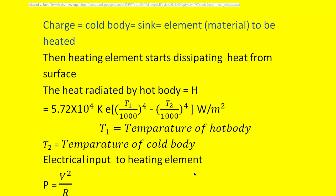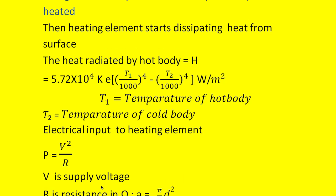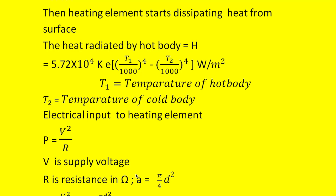The electrical input to the heating element is written as P = V²/R, where V is the applied voltage to the wire or heating element and capital R is the resistance of the wire. The resistance R is given by ρL/A, and the cross-sectional area A is given by (π/4)D², where D is the diameter of the wire.